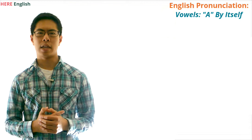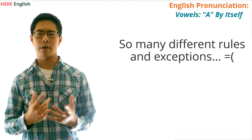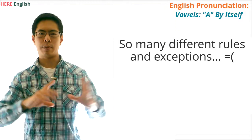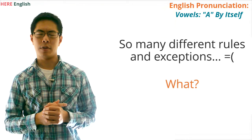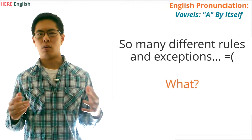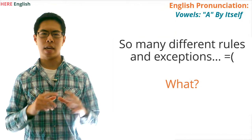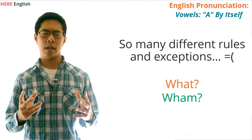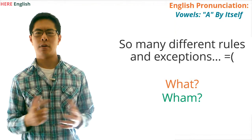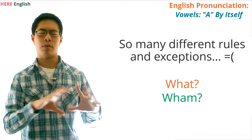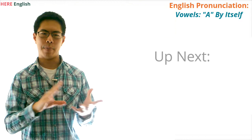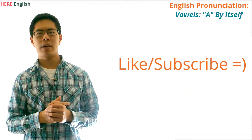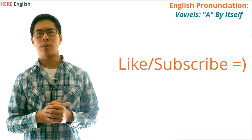Okay, so we're going to stop here with the rules and examples for how to pronounce the letter A when it is by itself in a word. One reason why the English language is so difficult is because there are just so many different rules and exceptions. For example, what category does the word 'what' fit into? The accent or stress is on the A, but the sound is 'what,' not 'wat.' Also, why then do we say 'wham'? Hopefully you found this video helpful. In the next video, we're going to proceed to talk about the vowel E. If you like these videos, make sure to like and subscribe. Thanks for watching.